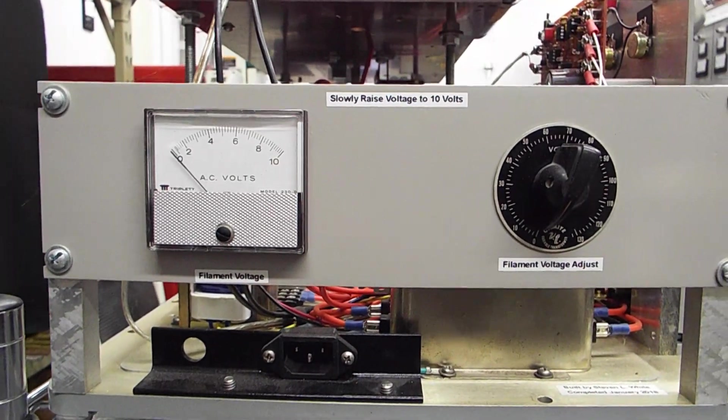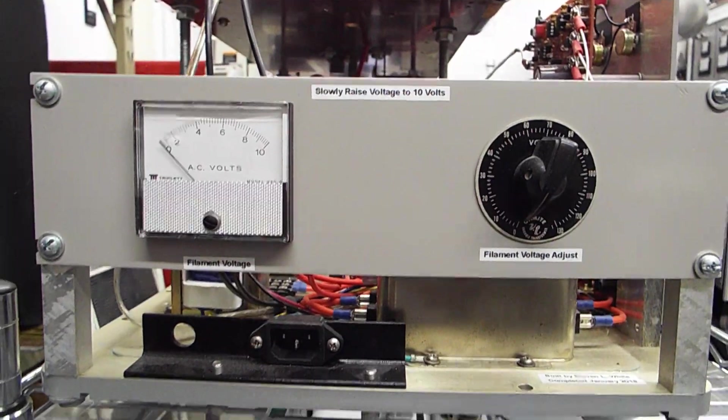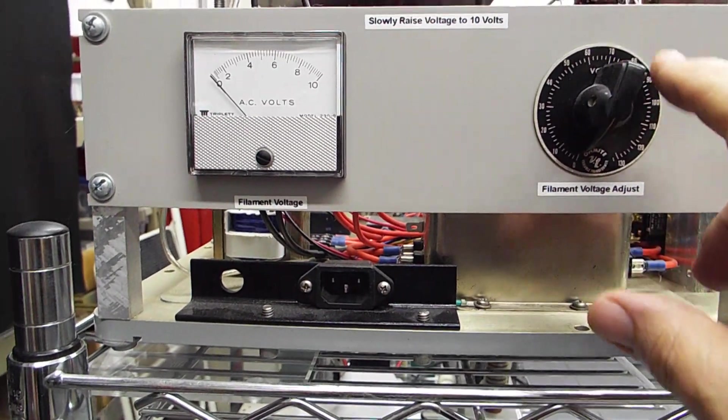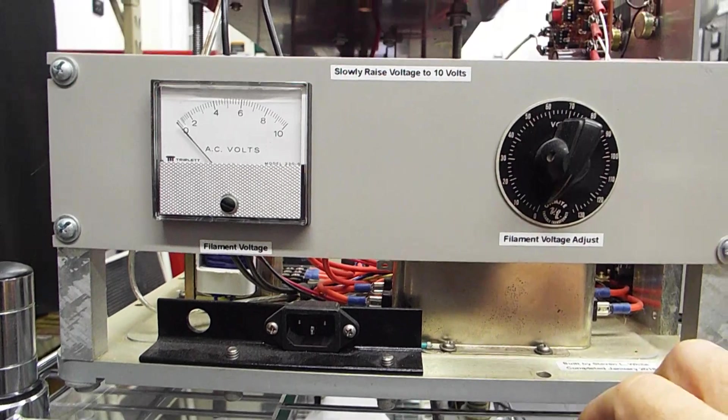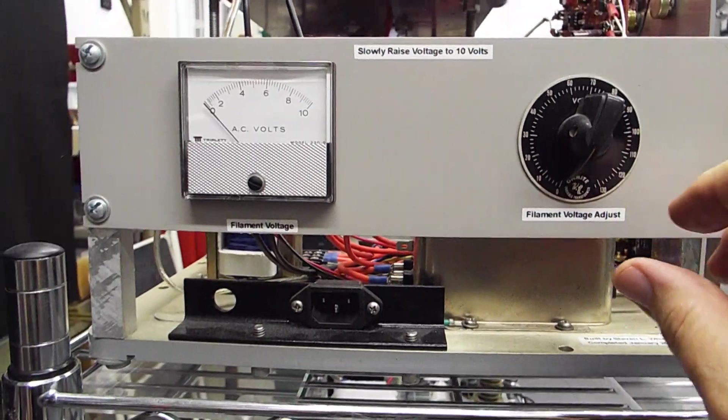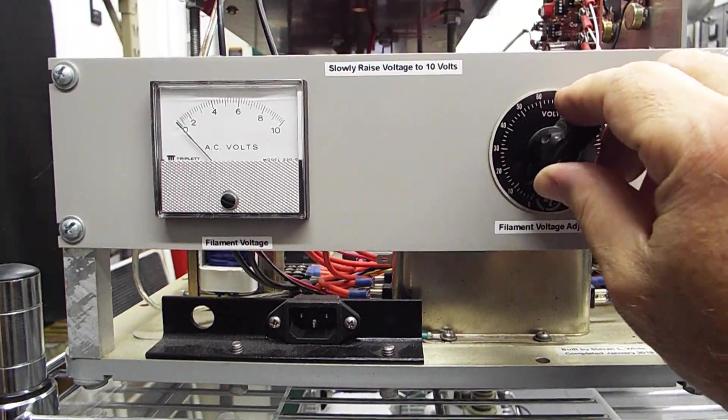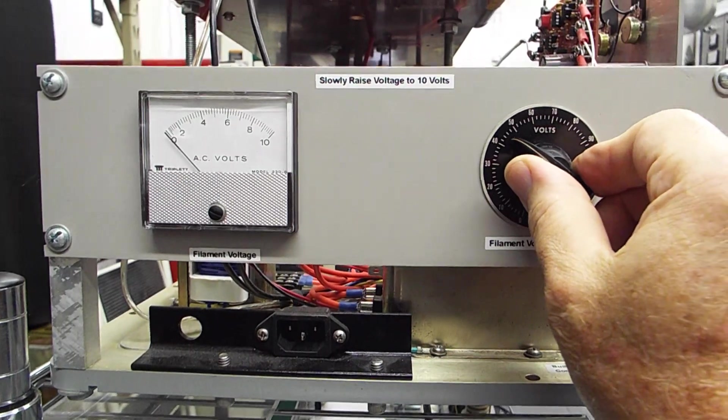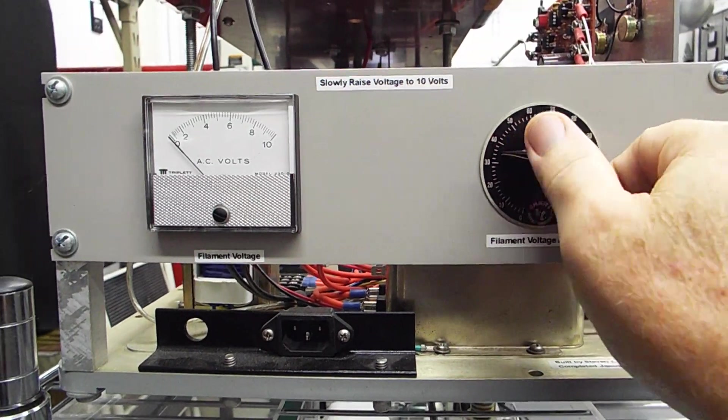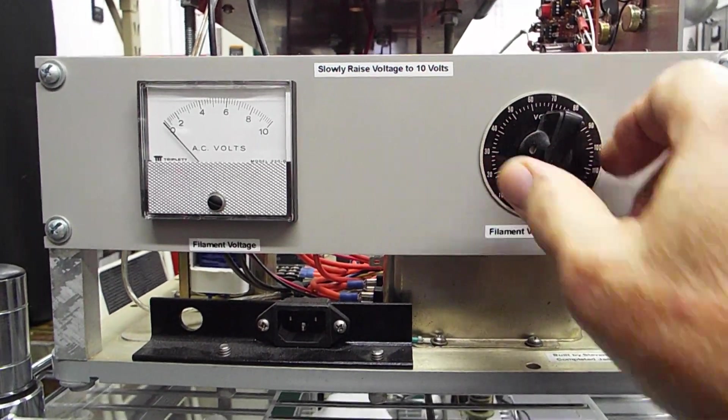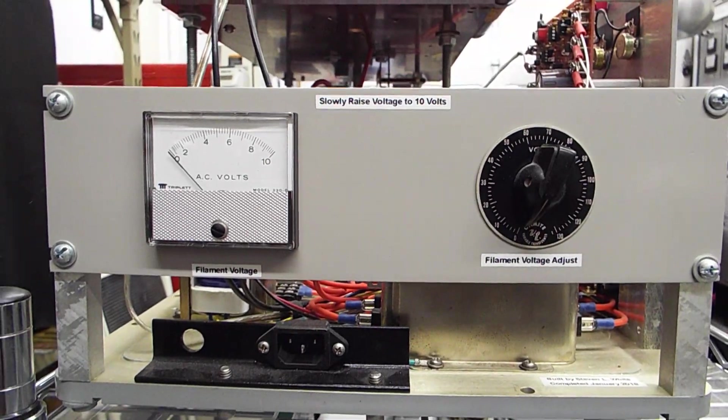And for this tube, it wants to operate at 10 volts. So, the reason I have this variac for the filament is by slowly bringing the power up to 10 volts, I can make the tube last a lot longer. It's much less stress on the filament.